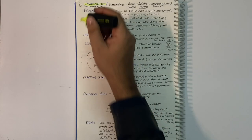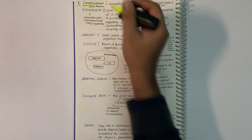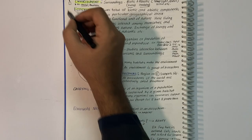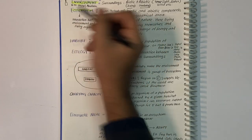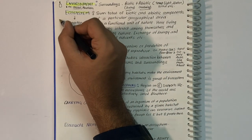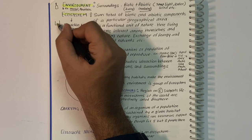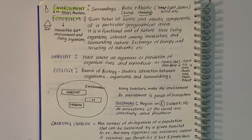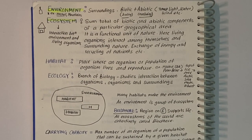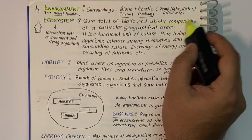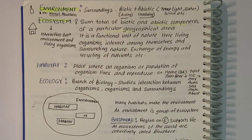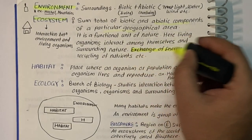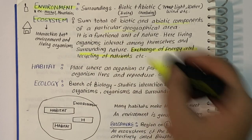Ecosystem is the sum total of biotic and abiotic components of a geographical area. It's a functional unit of nature where living organisms interact among themselves and with surrounding nature. They exchange energies and recycling of nutrients takes place in the environment.